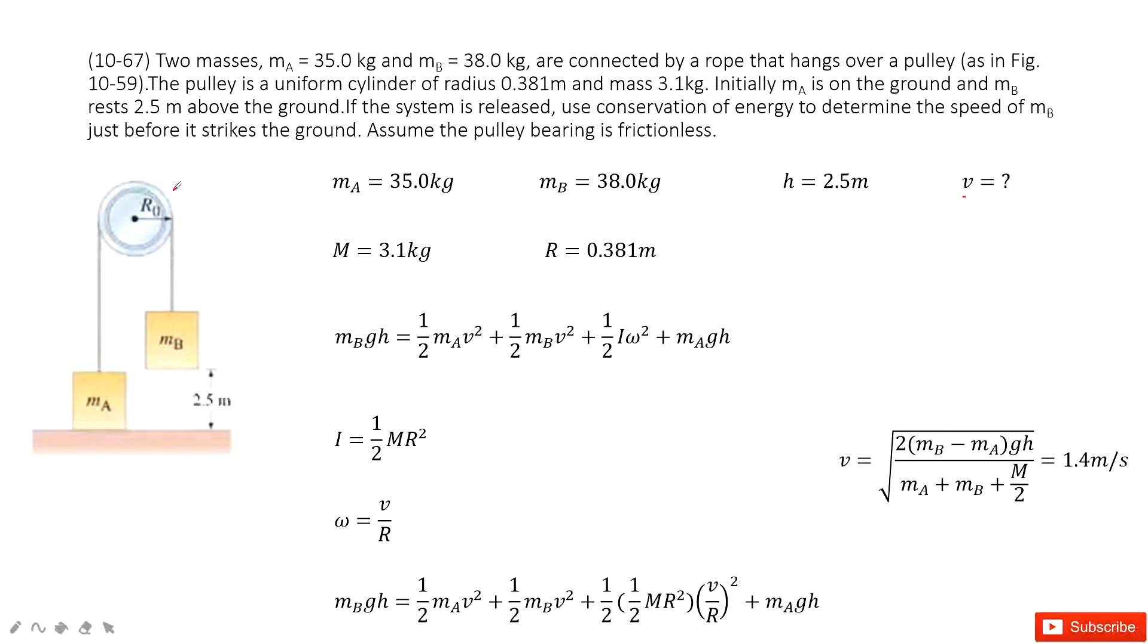So you can see the problem gives you the hint to use the conservation of energy. So now we can see the conservation of energy is given. So first, we consider the initial energy, right? For this system, we consider the reference point at zero as zero. The potential energy is zero. So at initial, the energy just comes from the potential energy, mbgh. Agree?